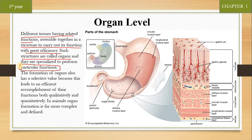Different tissues مل جاتے ہیں اور کوئی ایک specific کام کرنے لگ جاتے ہیں۔ جب tissues ملیں گے تو ایک particular structure بنا دیں گے۔ اس structure کے اندر ہر tissue اپنا specific کام کرے گا۔ ہر tissue کا اپنا personal کام ہوگا، اور یہ مل کر پورے structure کا کام بن جائے گا، جس سے efficiency اور کام کرنے کی صلاحیت increase ہو جائے گی۔ اس کو organ کہتے ہیں۔